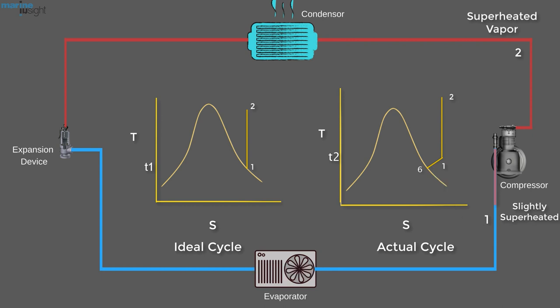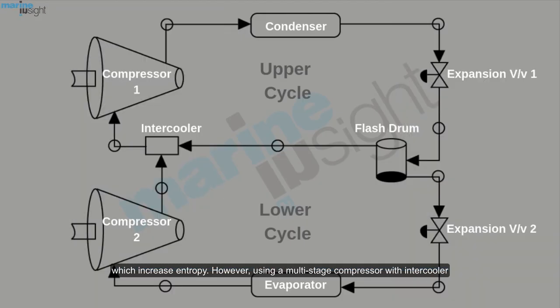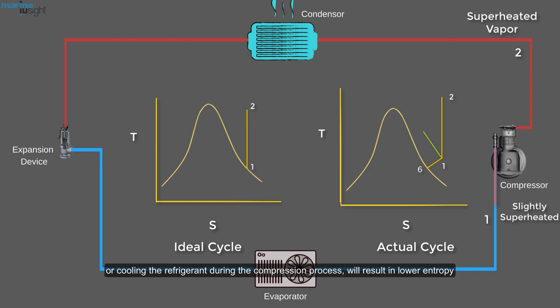The compressor is not internally reversible in practice, which increases entropy. However, using a multi-stage compressor with intercooler, or cooling the refrigerant during the compression process, will result in lower entropy.